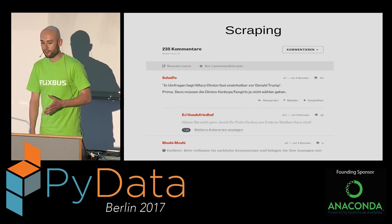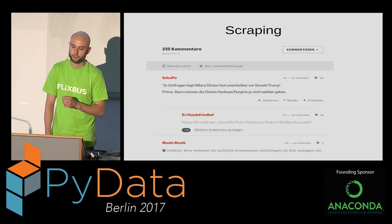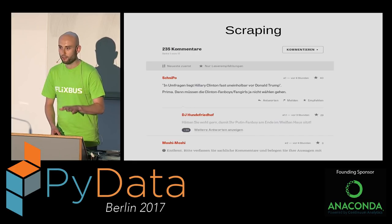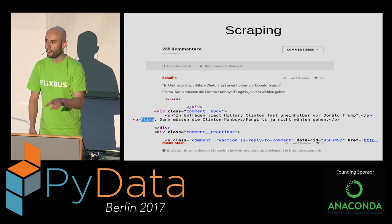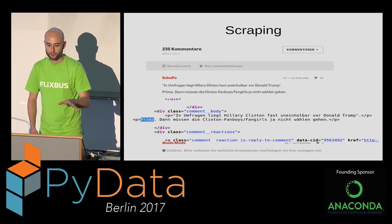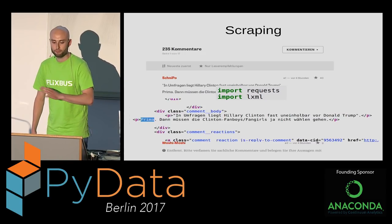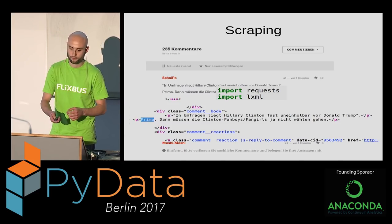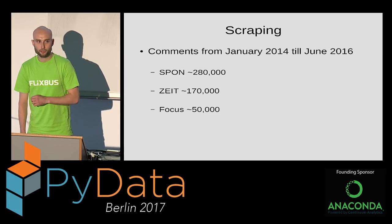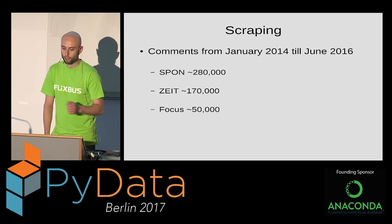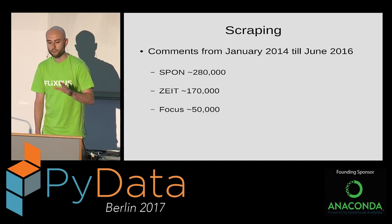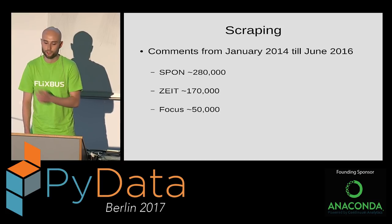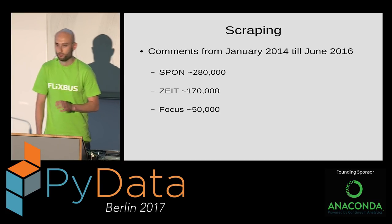Let's talk about how I gathered the data. This is a screenshot of a comments section. If you look into the HTML source code, the comments pop out right there, which is super nice, because you can use something like the requests library or LXML to parse the HTML and grab the comments straight from the source code. I gathered quite a lot: about 280,000 from Spiegel Online, 170,000 from Zeit, and roughly 50,000 from Focus — written for articles between January 2014 and June 2016.